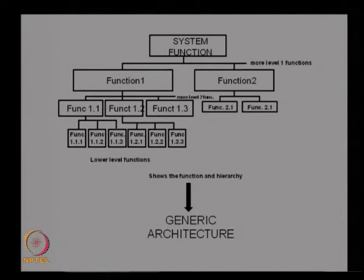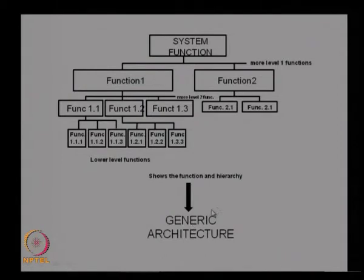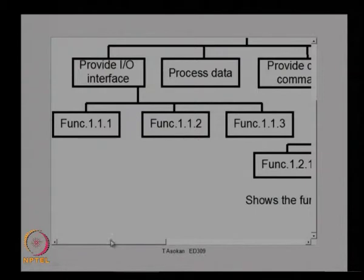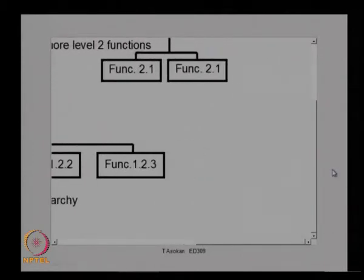As seen in the previous lecture, this is the functional architecture where we write down the top-level function and decompose it into sub-functions across many levels depending on requirements. The lower-level functions are the configuration items identified in the generic architecture. From this functional architecture we develop the next level — the physical architecture.